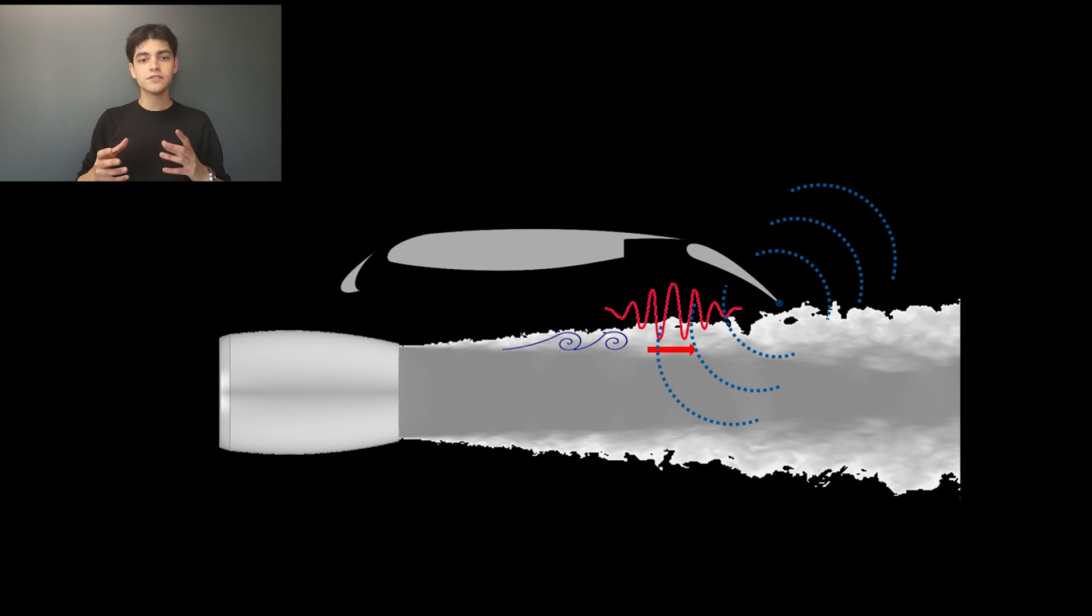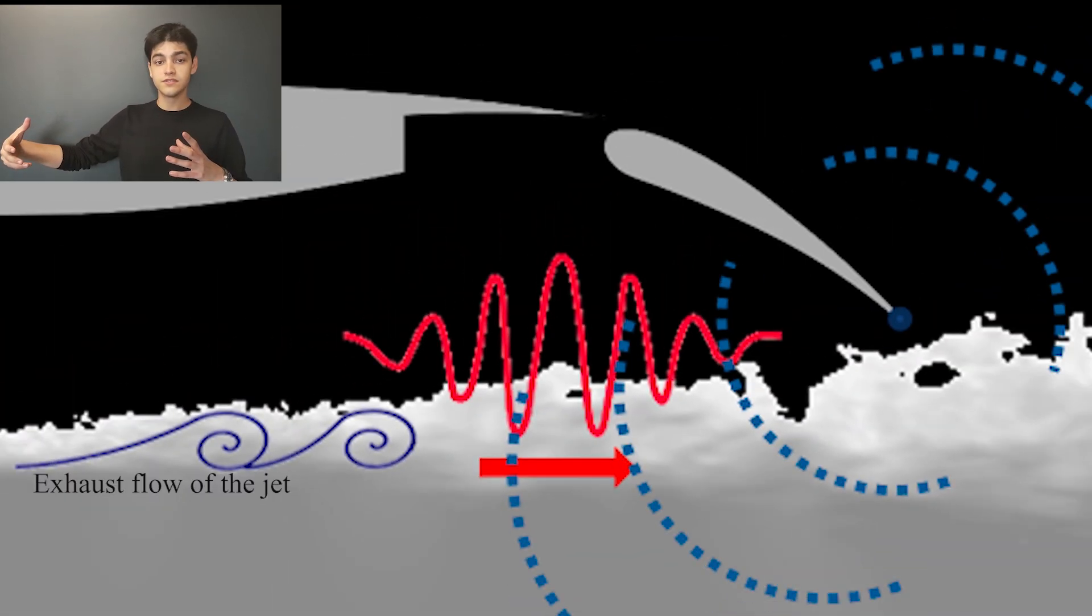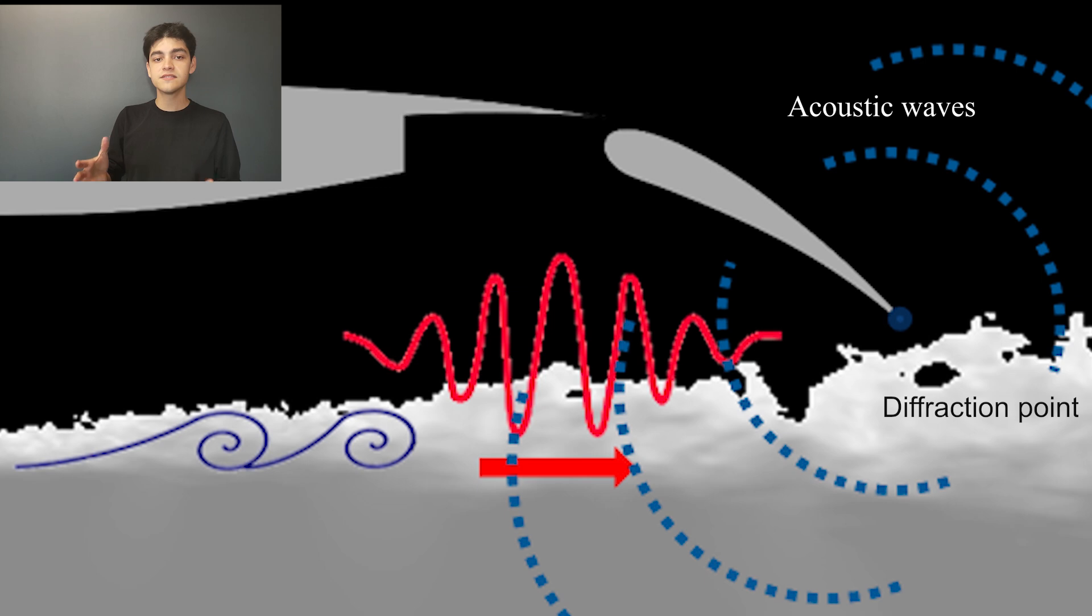What happens is the turbulent structures that are produced in the exhaust flow of the jet—of the turbofan engine—interact with the trailing edge of the flap, which acts as a diffracting point for those acoustic waves.